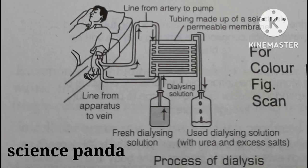An artificial kidney contains a number of tubes with a semi-permeable lining, suspended in a tank filled with a dialyzing fluid. This fluid has the same osmotic pressure as that of blood, except that it is devoid of nitrogenous wastes such as urea.